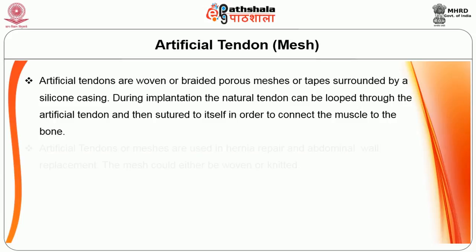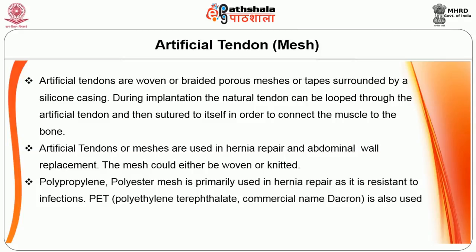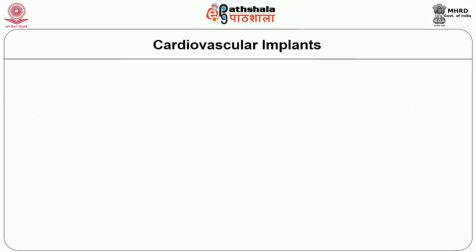Artificial tendons are meshes — woven or braided, porous or tapes — surrounded by silicon casting. During implant, the natural tendon can be hooked or looped through the artificial tendon and then sutured to itself to connect the musculature to the bone. These are also used for hernia repair and abdominal wall replacement. The mesh can either be woven or knitted. Polypropylene and polyester meshes are primarily used and must be resistant to infection. PET is also used. Mesh for hernia and other medical requirements are manufactured using the warp knitting process on double-raschel warp knitting machines.